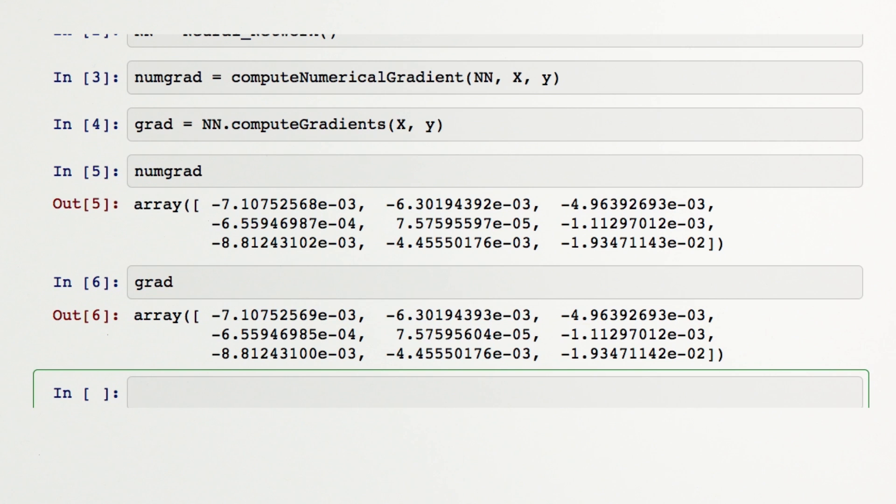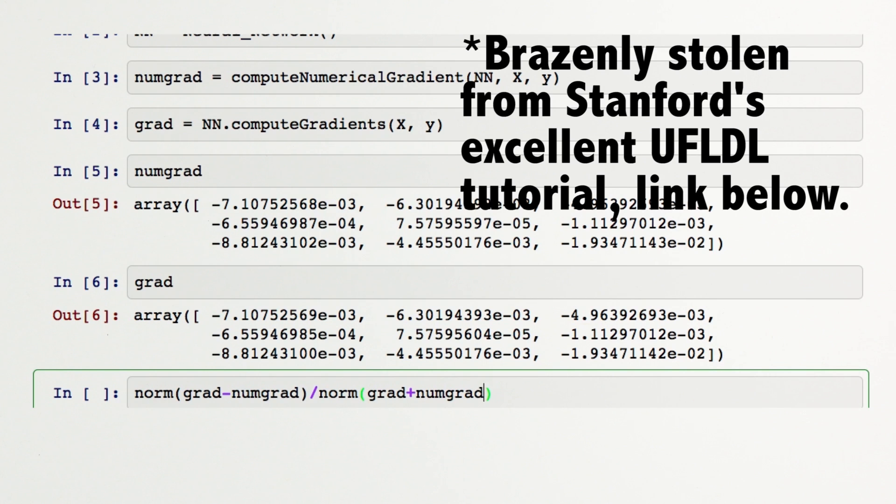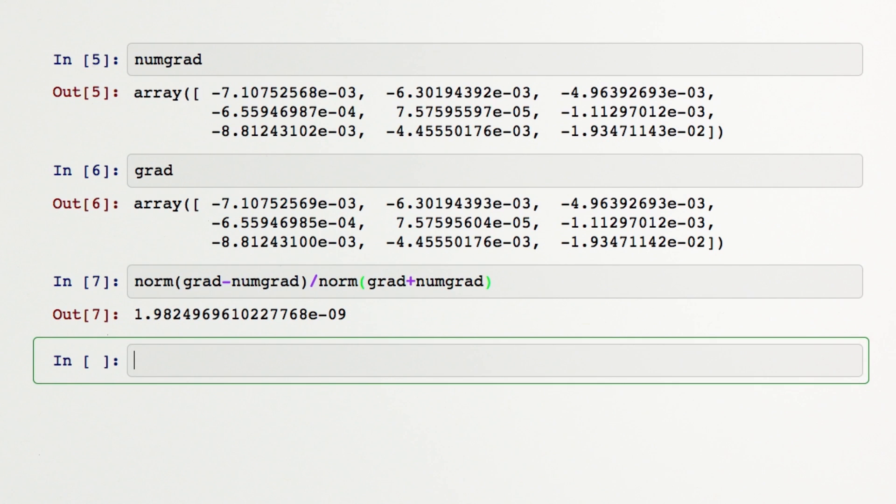A nice way to do this is to divide the norm of the difference by the norm of the sum of the vectors we would like to compare. Typical results should be on the order of 10 to the minus eighth or less if you've computed your gradients correctly.